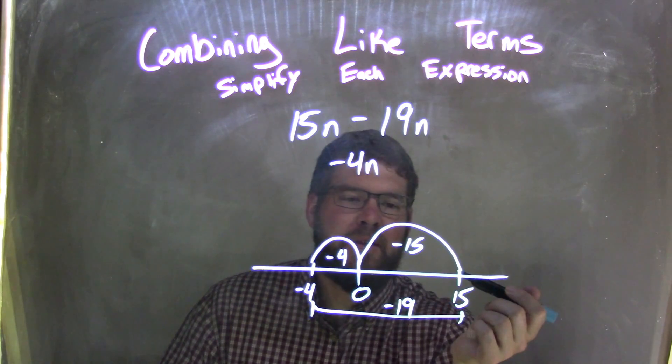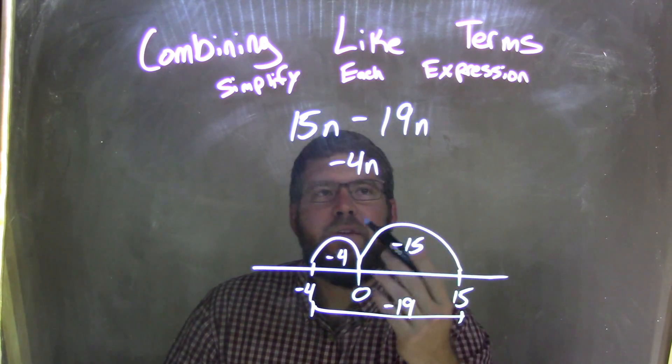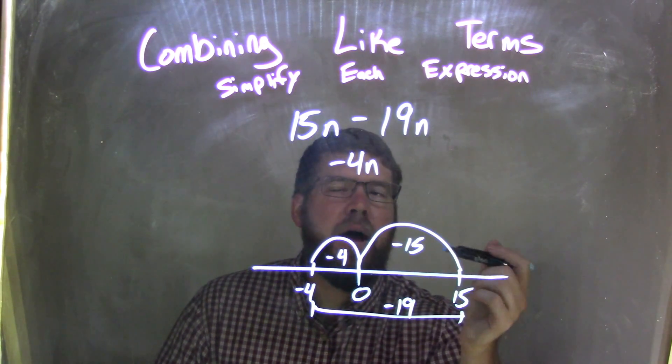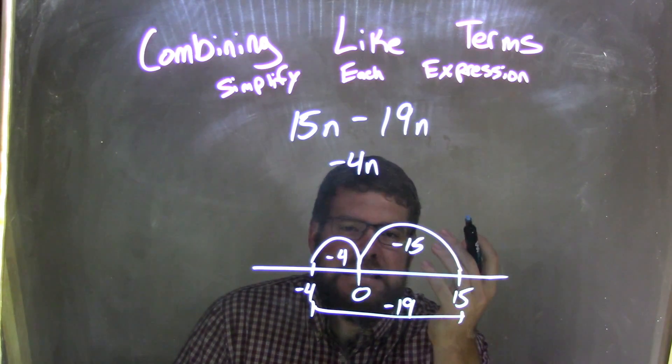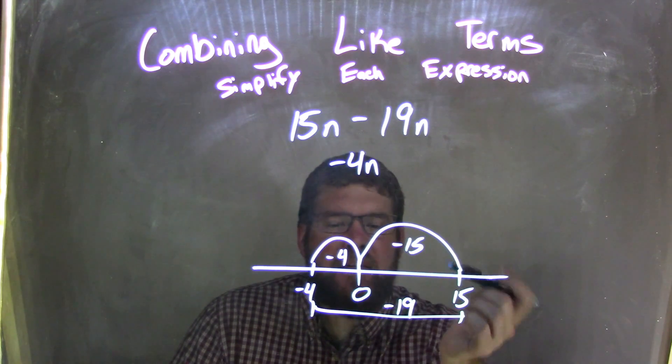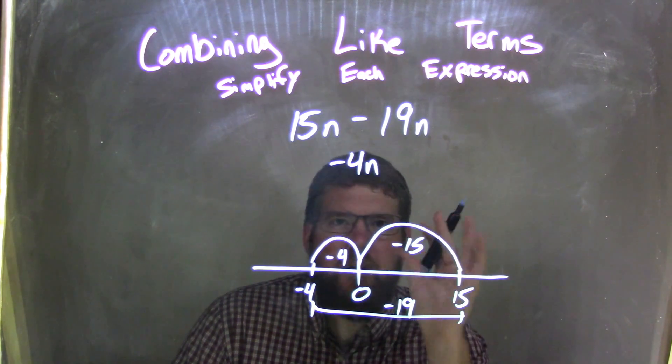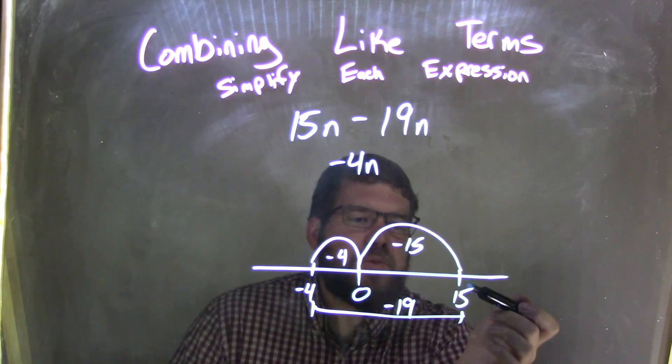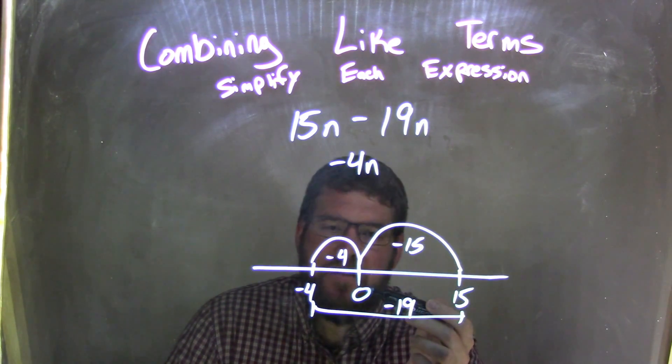So again, my final answer is negative 4n. So let's recap. We start with 15n minus 19n. I know that 15n was a smaller number than 19n, so when I subtract 19, it's going to become a negative number. So I have in my brain that my final answer is going to be negative. We start with 15 here, subtract 15 units—I know that gets me to 0.